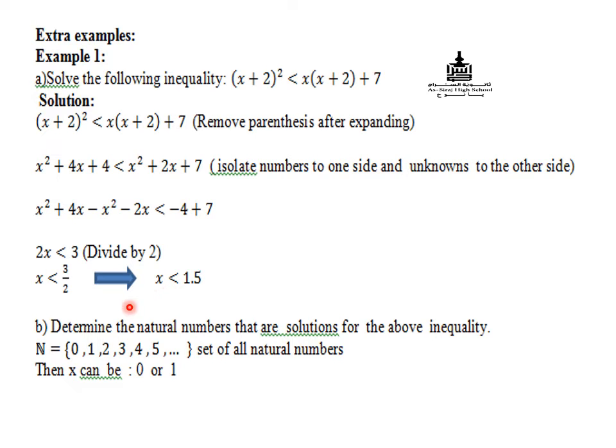Determine the natural numbers in part b that are solutions for the above inequality. Don't forget that natural numbers are positive numbers starting from 0 and they don't contain a decimal point.